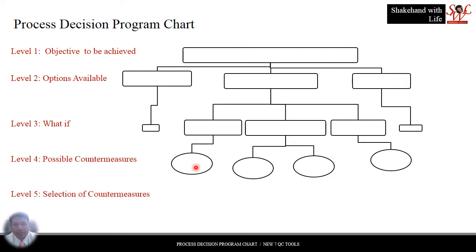This is the Process Decision Program Chart. We have different levels. At level 1, the objective we want to achieve is written in this box. At level 2, the options available to achieve that objective. At level 3, what if something does not go according to plan.